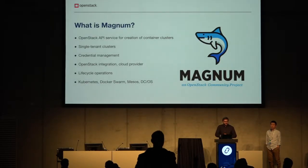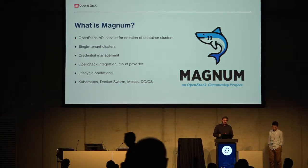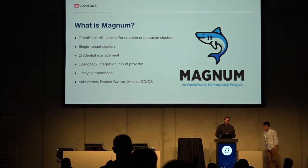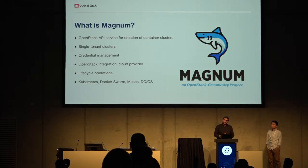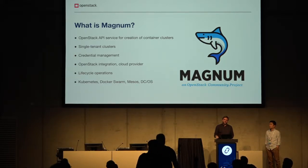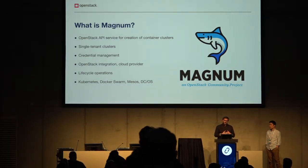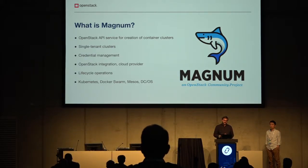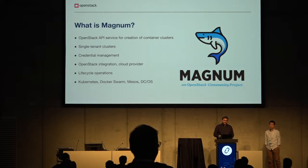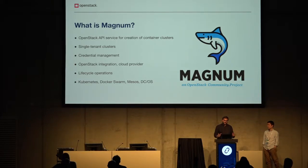What is Magnum? Some of you might not know. Magnum is an OpenStack API service — it's a simple API that we offer to users so they can create container clusters with one click. These container clusters are single-tenant, meaning all compute nodes hosting the cluster and running Docker, Swarm, Kubernetes, or Mesos are owned by the same tenant. Isolation is ensured either by virtual machines or physical hosts.